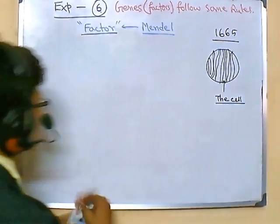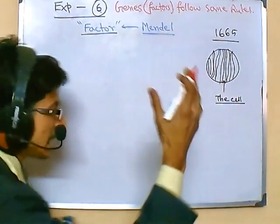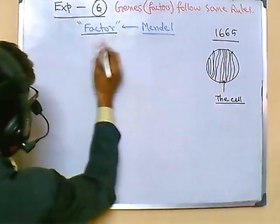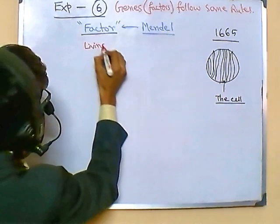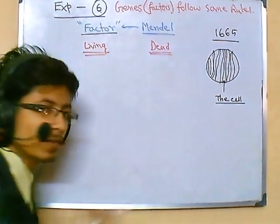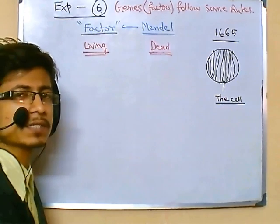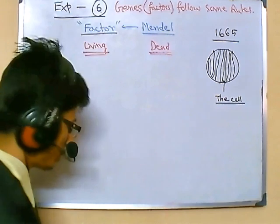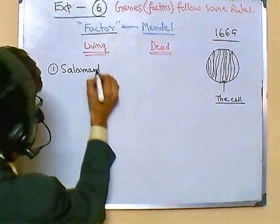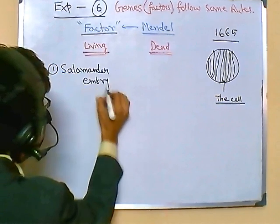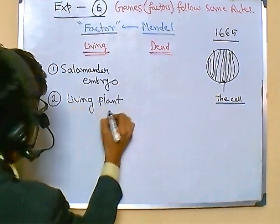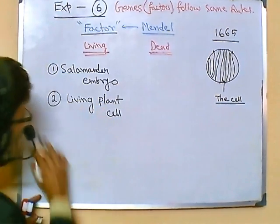Schwann took living cells instead of the dead cork cells. He took those living cells and also the dead cells and compared them. He looked at some cells of a living organism, and also a tree bark that had been placed for many years — a dead tree bark. For the living part, for example, he took salamander embryo cells and living plant cells — cells of different shapes and sizes from both animals and plants.